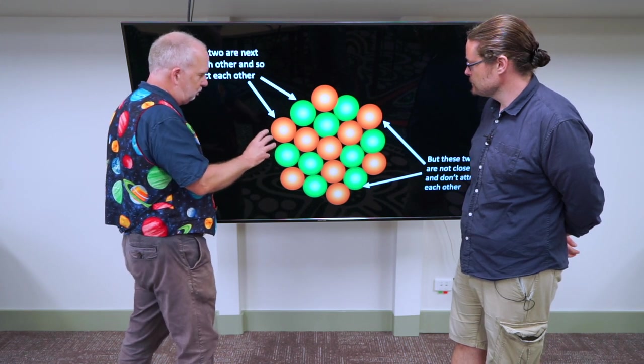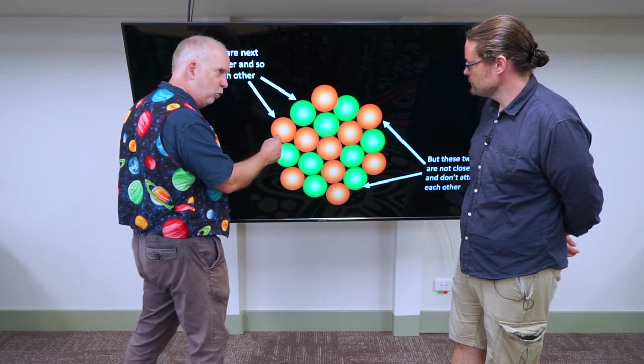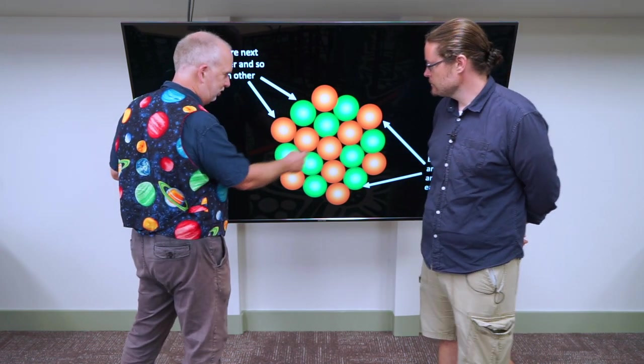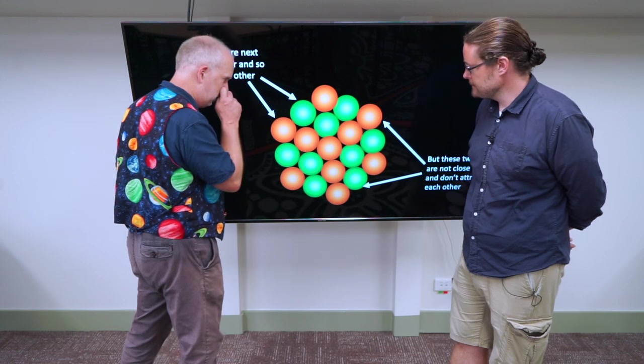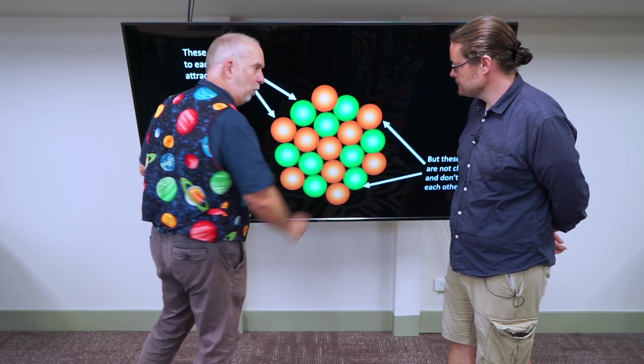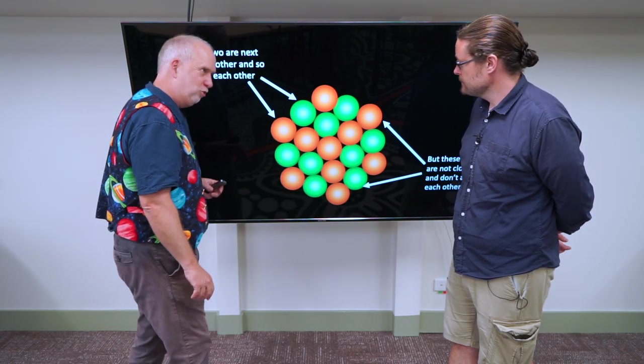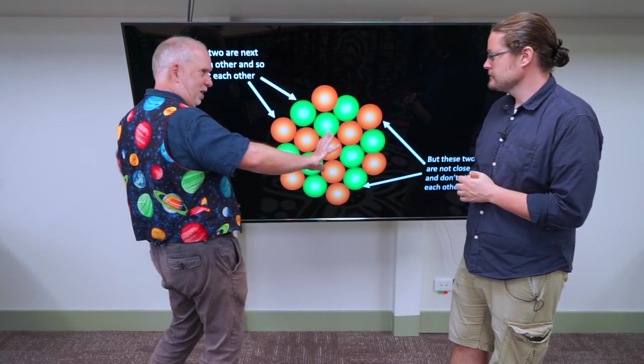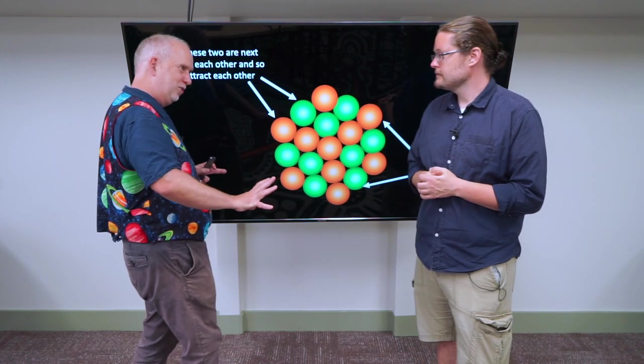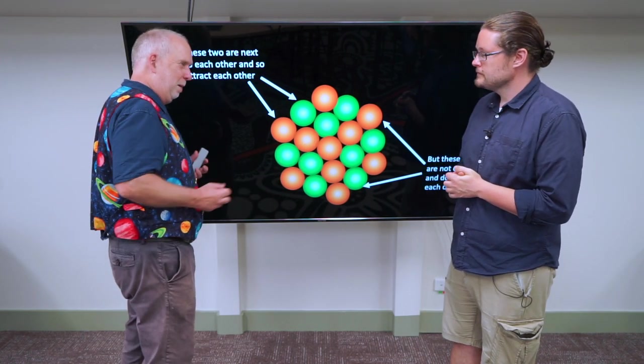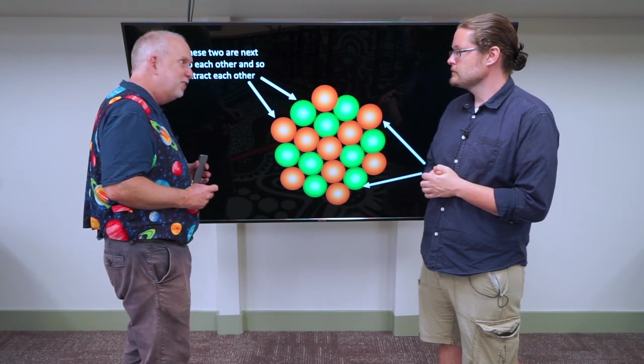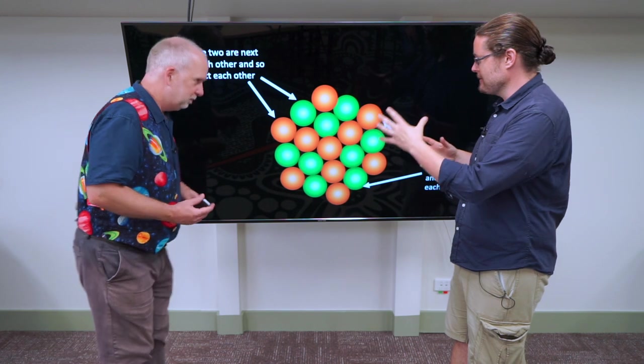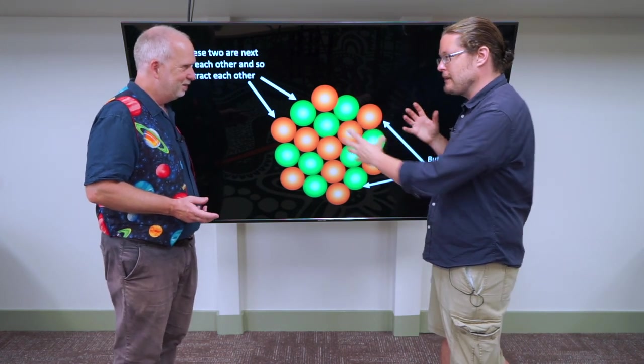So the strong force is very short-ranged. For example, the strong force around this proton probably only attracts these neighbors. It doesn't attract these ones because it's so short-ranged. But this one and that one are still repelling each other because the electromagnetic force is much longer-ranged. So as you get bigger and bigger, the strong force doesn't really increase because then you attract their neighbors. But the electrostatic repulsion does get bigger and bigger.